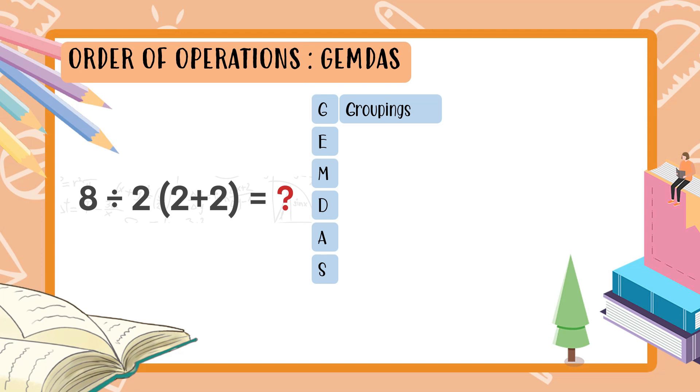Then the next one to solve after groupings is E — the Exponent. If there is an exponent in the expression, that is what you solve next.